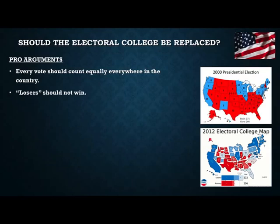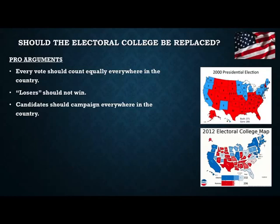There's also the argument that losers should not win. In 1876, 1888, and 2000, we had a president elected who got fewer votes than the person they lost to nationwide. There's also the argument that candidates should campaign everywhere in the country, but under the current system candidates pretty much only campaign in states that have a chance of flipping from red to blue or blue to red — we call them swing states. All the other states hardly ever get a visit from presidential candidates.